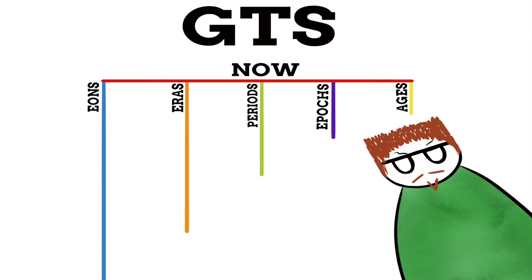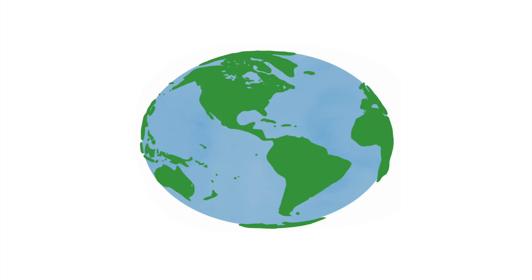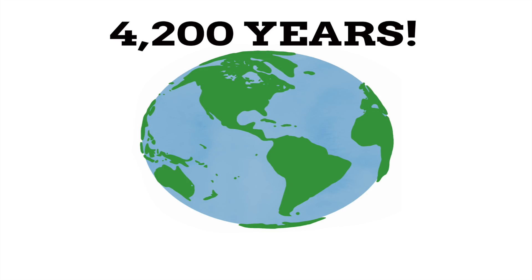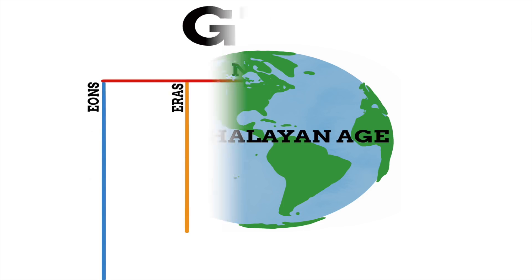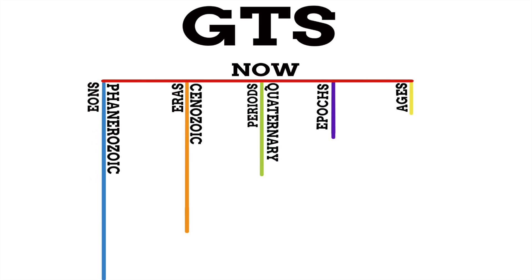So what are the Eon, Era, Period, Epoch, and Age we're in right now called? Recently, expert geologists officially declared that we are living in a new age of Earth's history — the Meghalayan Age, which we've actually been living in for the last 4,200 years. This means the time in the GTS we're currently living in is: the Phanerozoic Eon, the Cenozoic Era, the Quaternary Period, the Holocene Epoch, and the Meghalayan Age.